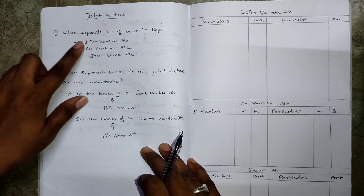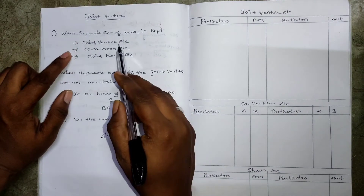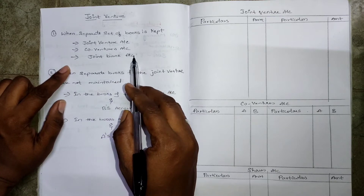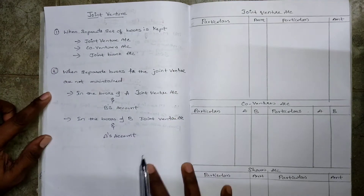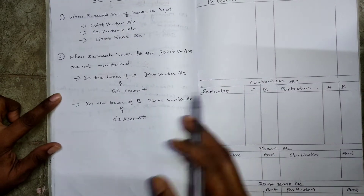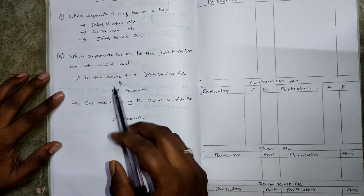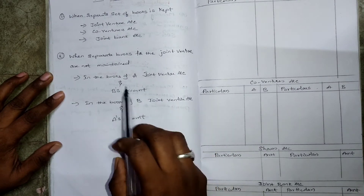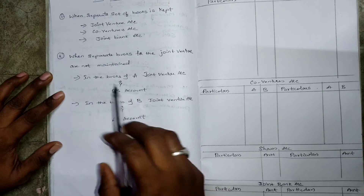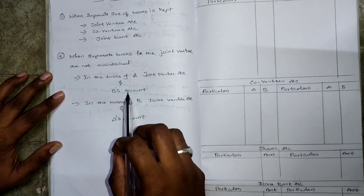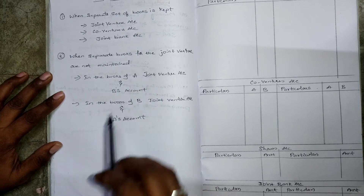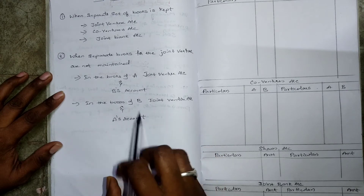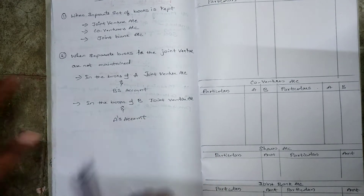When a separate set of books is maintained, the accounts are: Joint Venture Account, Co-Ventures Account, and Joint Bank Account. When separate books of the joint venture are not maintained, in the books of A: Joint Venture Account and B's Account; in the books of B: Joint Venture Account and A's Account. These are the co-ventures' names.